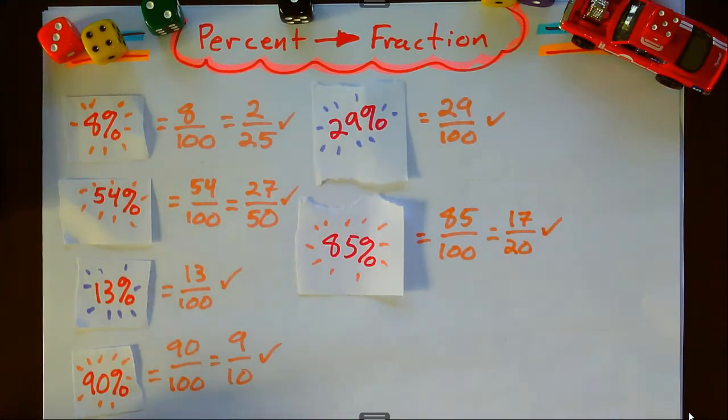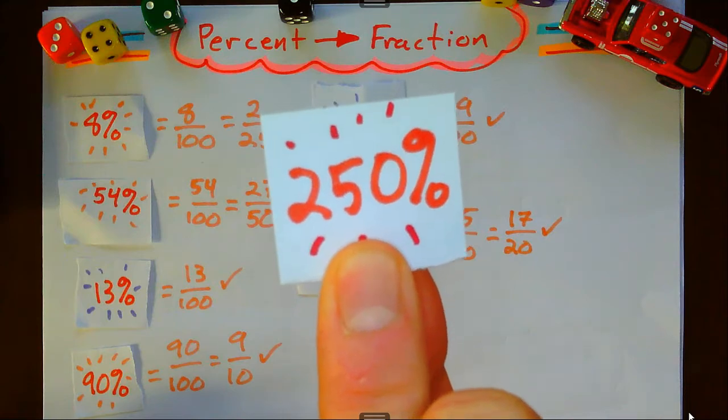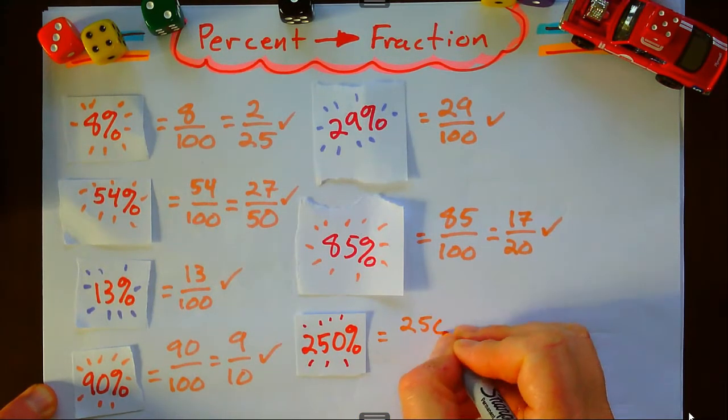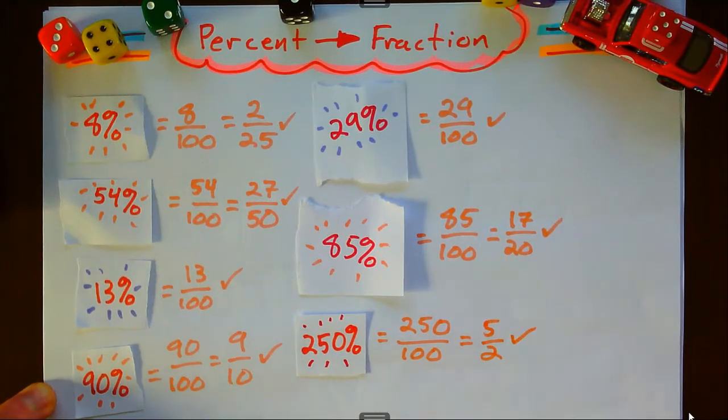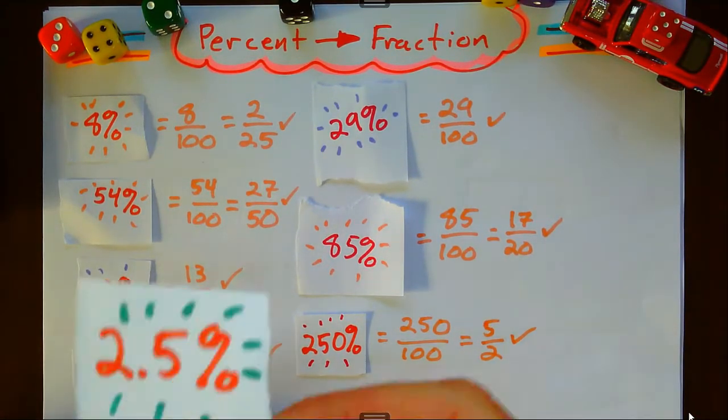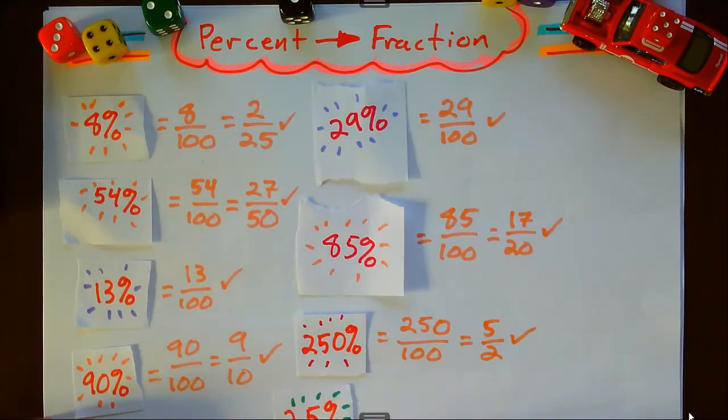And we get 17 over 20. What about 250%? It's still over 100, it doesn't matter what it is - 250 over 100 simplifies down to 5/2. How about 2.5%? It's still out of 100.